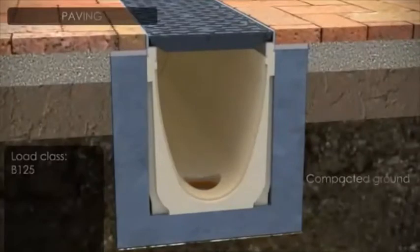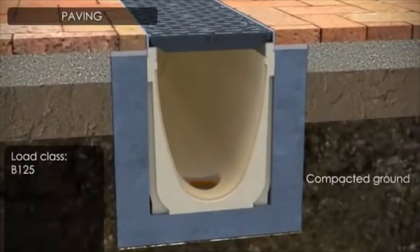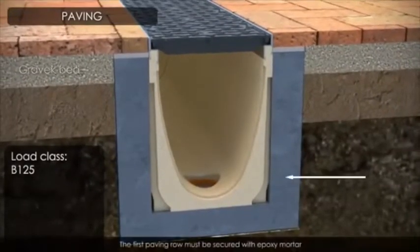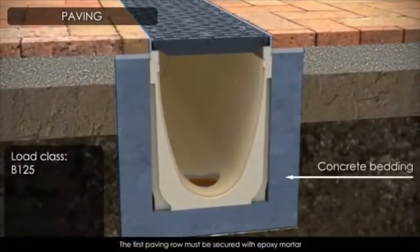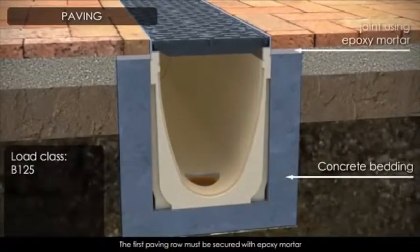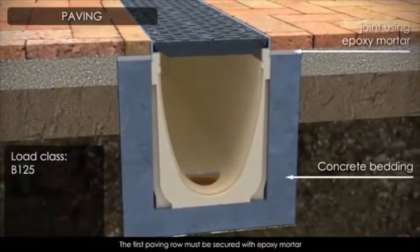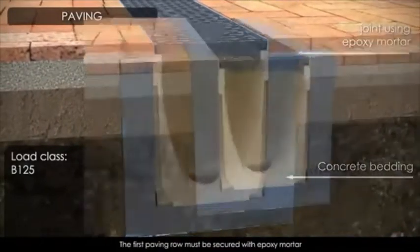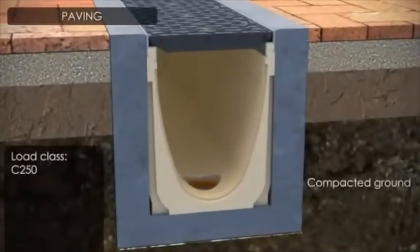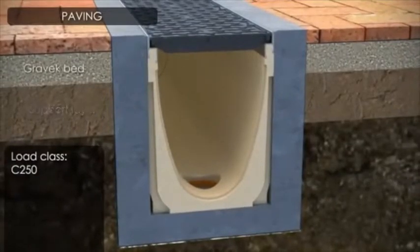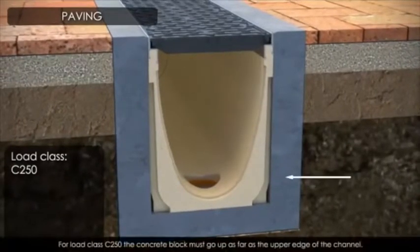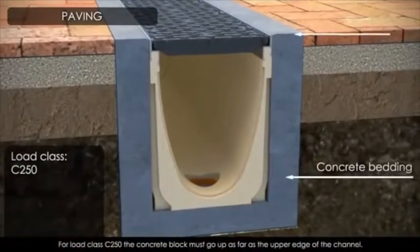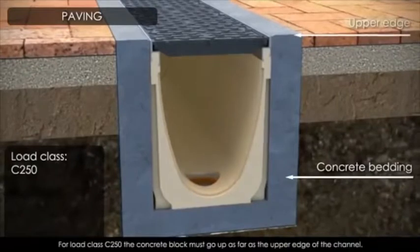For load class B125, the first paving row must be secured with epoxy mortar to ensure adherence. For load class C250, the concrete block must be installed up to the upper edge of the channel.